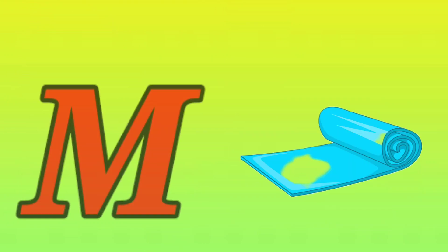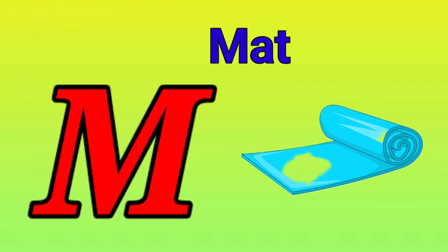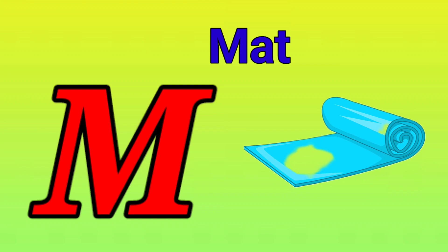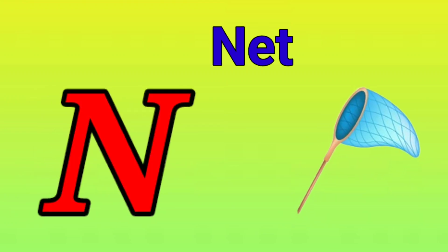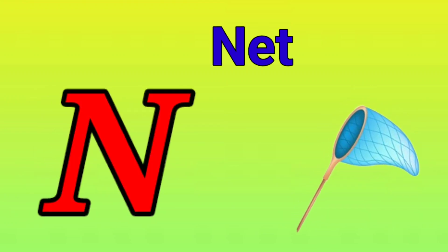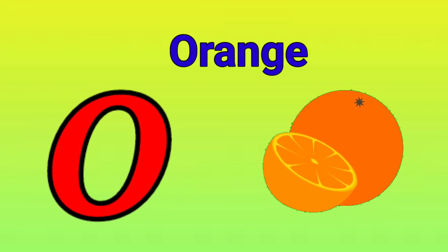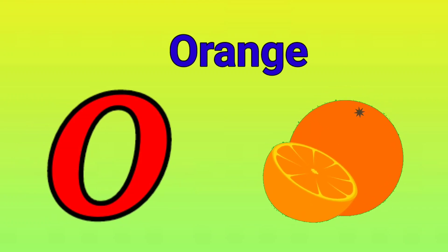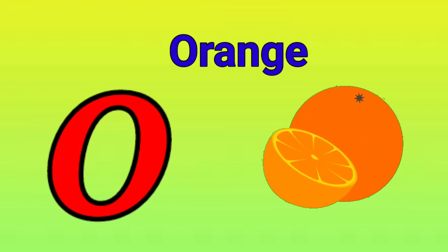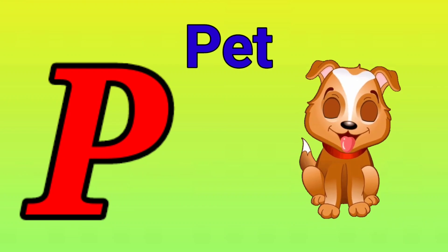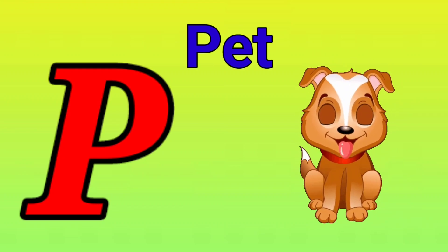M is for mat, m-m-mat. N is for net, n-n-net. O is for orange, o-o-orange. P is for pet, p-p-pet.